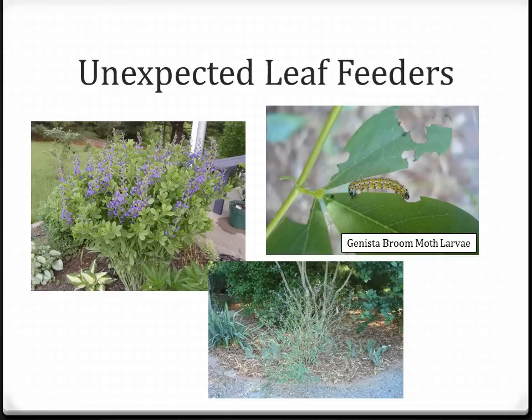Every year we have unexpected leaf feeders or different pests that we don't see from year to year. In 2012, we had a lot of reports of the Janista broom moth on Baptisia. We usually think of this as an insect pest of both Baptisia and Crape Myrtle, but we do not see it every year. You can see in the upper left a plant that has not been affected, and in the lower center a Baptisia fronting a Crape Myrtle that has been totally defoliated — interestingly, it was actually the Baptisia that was defoliated.